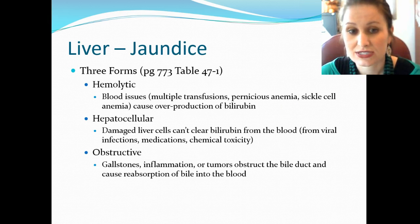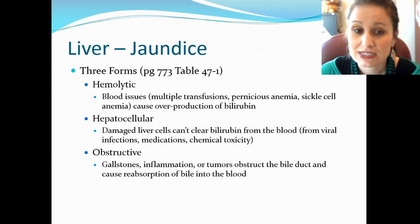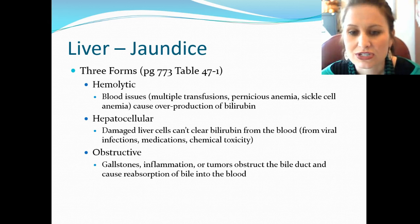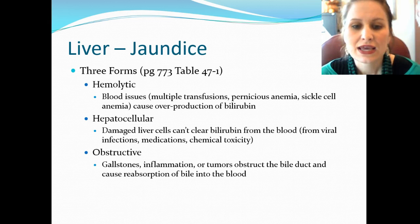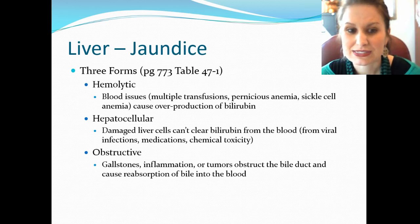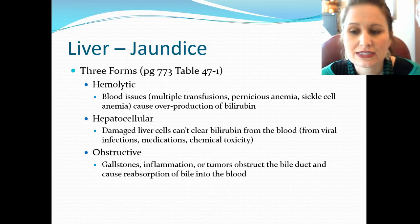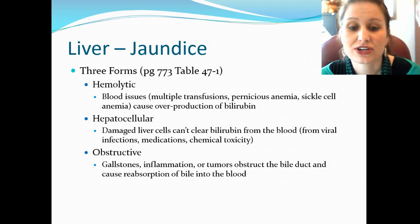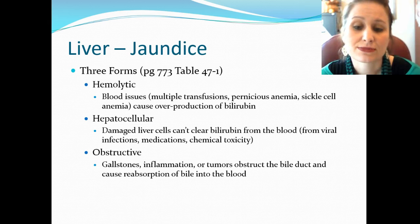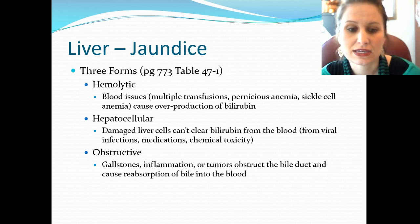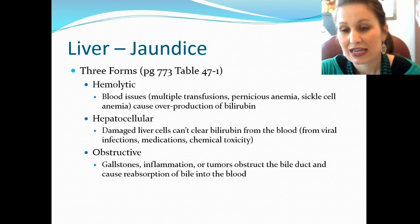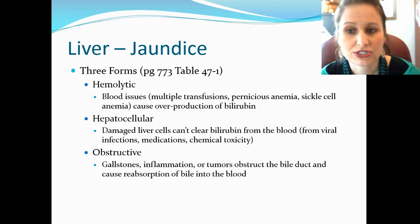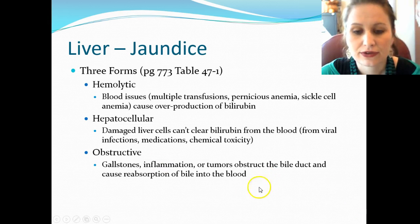There are three forms of jaundice listed in Table 47-1, page 773. Hemolytic jaundice involves blood issues — multiple transfusions, pernicious anemia, sickle cell anemia — causing overproduction of bilirubin from unhealthy or immature red blood cells. Hepatocellular jaundice is where liver cells are damaged and can't clear bilirubin from the blood, often from viral infections, medications, or chemical toxicity. Obstructive jaundice is where the bile duct is blocked by gallstones, inflammation, or tumors, and bile cannot pass through.